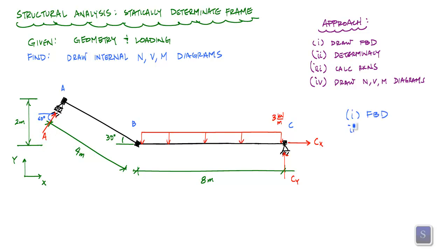The next thing I want to do is check on the static determinacy. I have told you already it's determinate, but we're going to verify that. Because I have no closed loop, what I have in terms of number of unknowns are three reactions. So that's three unknowns. The number of equilibrium equations I have for this entire frame is three, therefore statically determinate. Now I can go ahead and calculate these reactions.